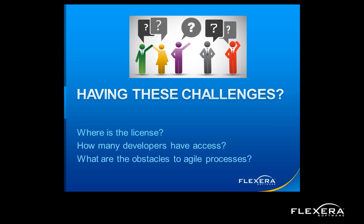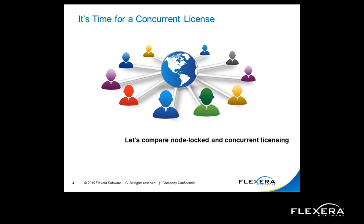To hit product launch dates you need to move fast. If different people on your team need to build part of an installation, the last thing you want is lost productivity while you figure out who has access to the software. For an agile or collaborative team, everybody needs access to complete their part of the installation whenever needed. If any of these challenges ring a bell, it might be time to consider moving to the concurrent license model.